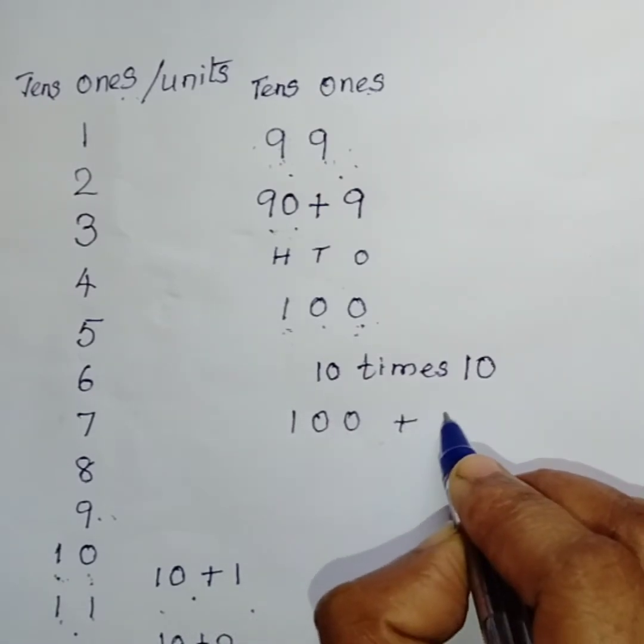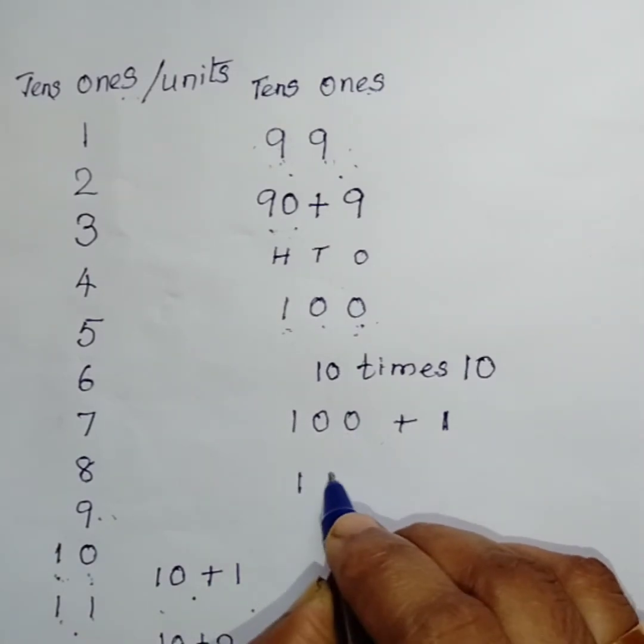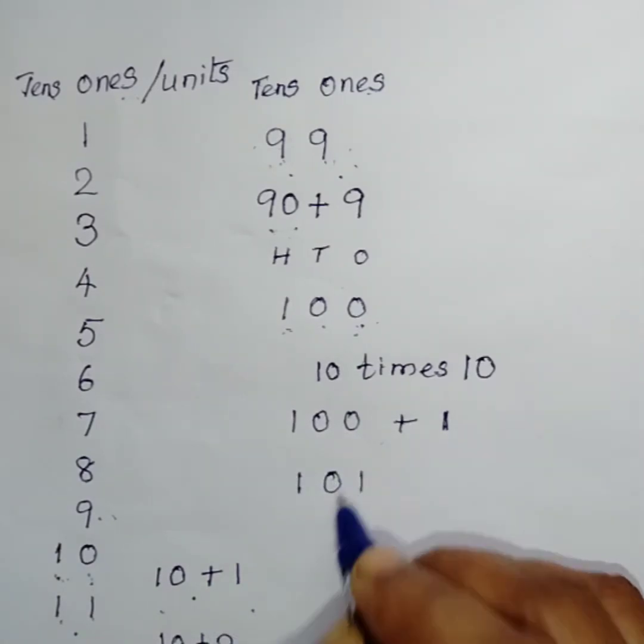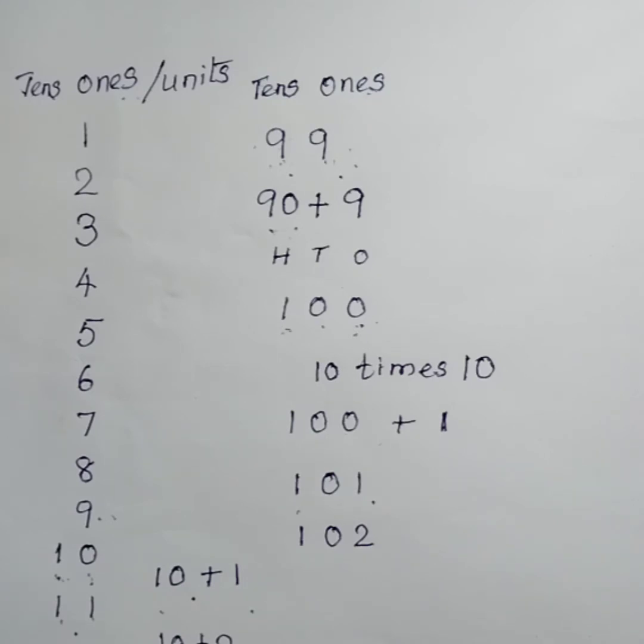Now, what is after 100? It is 100 plus 1, 101. How to write it? 1, 0, 1. Yes. 101, 102, 103. Like this, it goes on till 999.